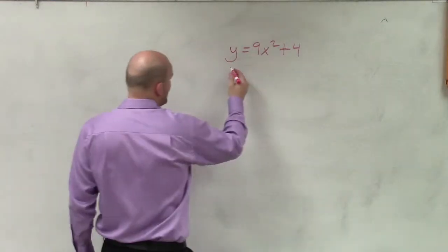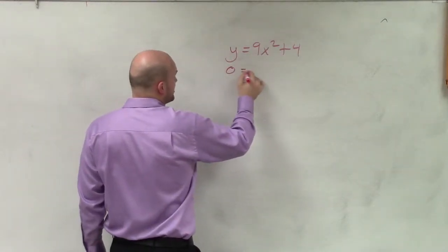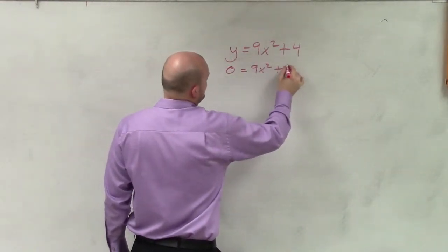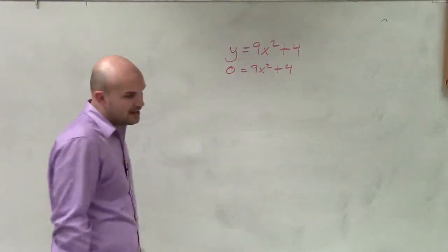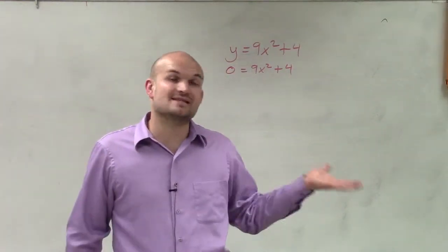To use the square root method, what we're going to want to do is set this equal to 0, because we're going to find the values for x that are going to be true when it's set equal to 0.